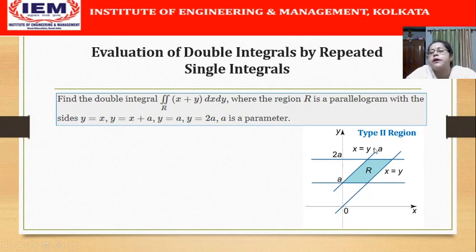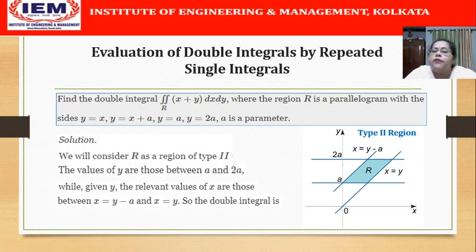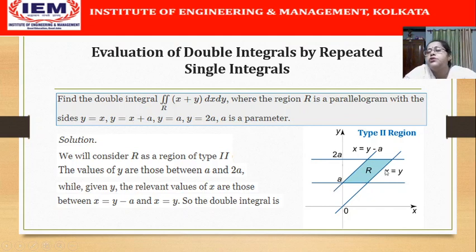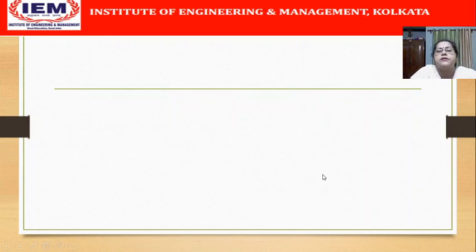Can we consider this as a Type 1 region? No, because y is not a function of x on the lower or upper curves — y is constant: y = a on the lower boundary and y = 2a on the upper boundary. So this is essentially a Type 2 region, meaning we must first vary x by taking a horizontal strip. As x varies, it goes from the left curve x = y − a to the right curve x = y, and y varies from a to 2a.